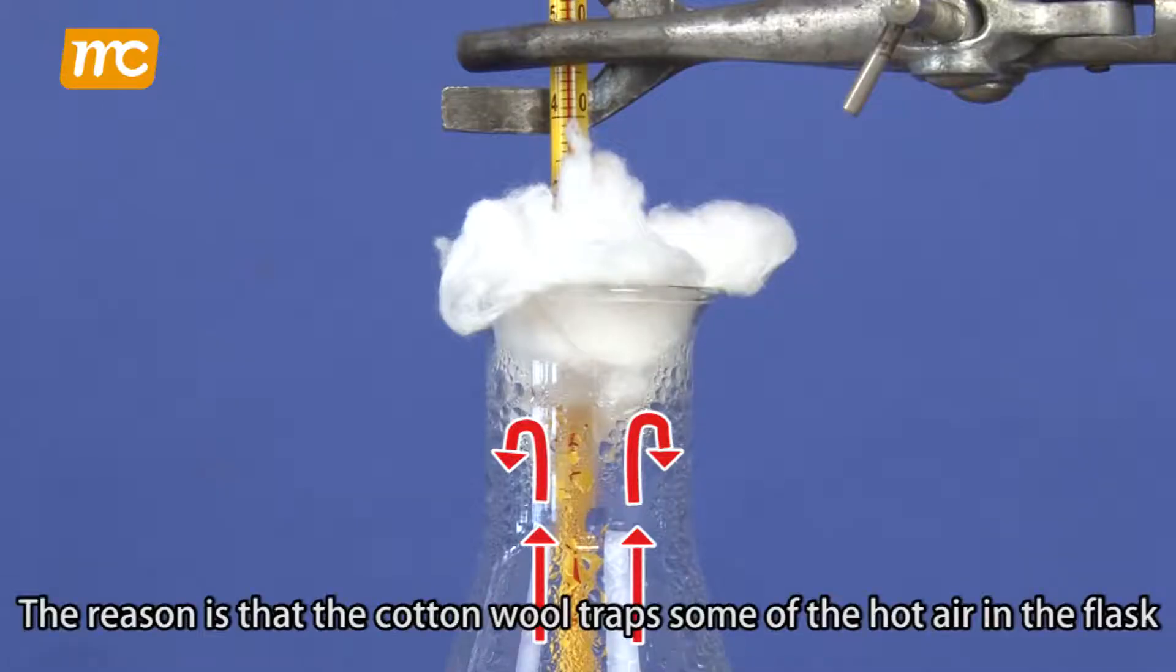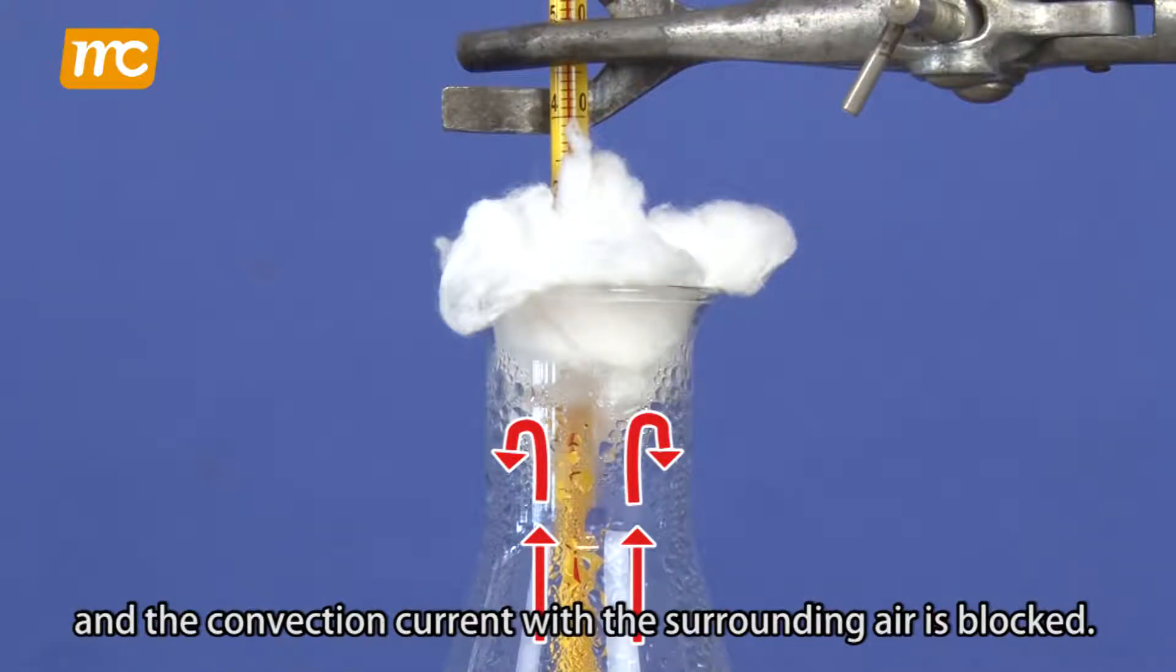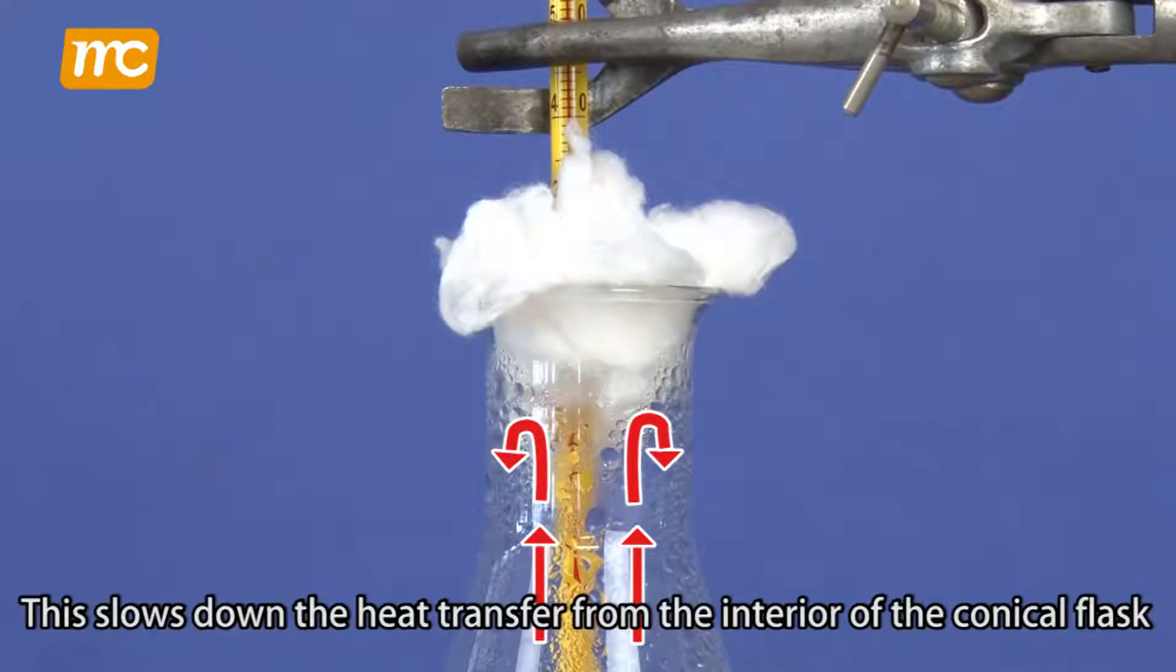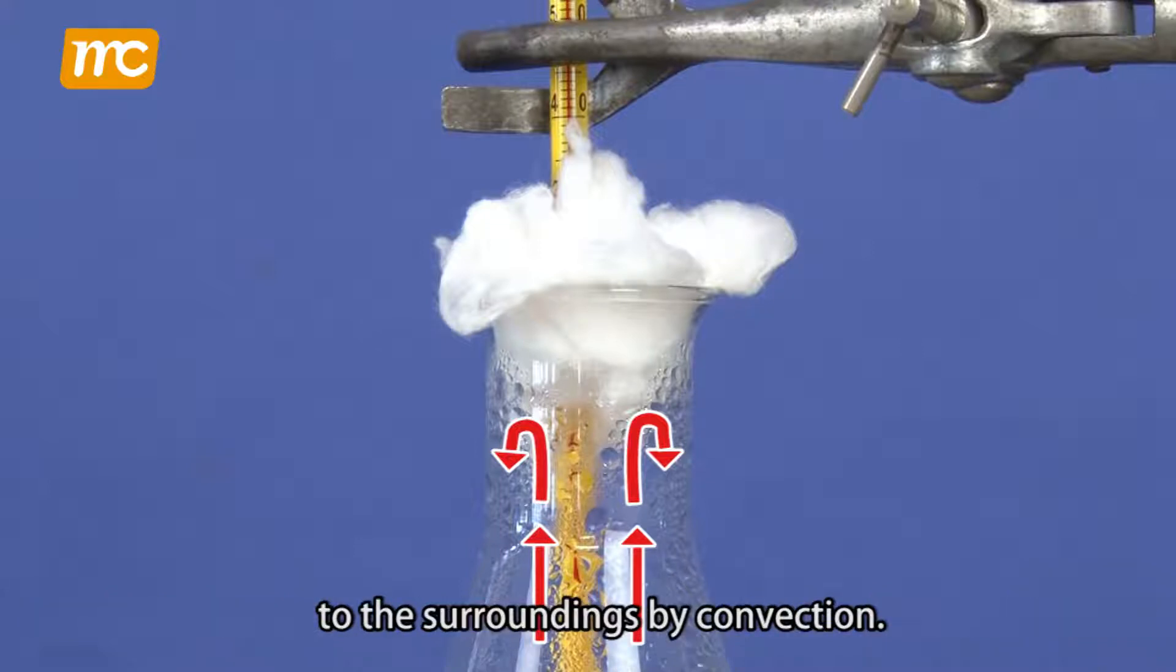The reason is that the cotton wool traps some of the hot air in the flask, and the convection current with the surrounding air is blocked. This slows down the heat transfer from the interior of the conical flask to the surroundings by convection.